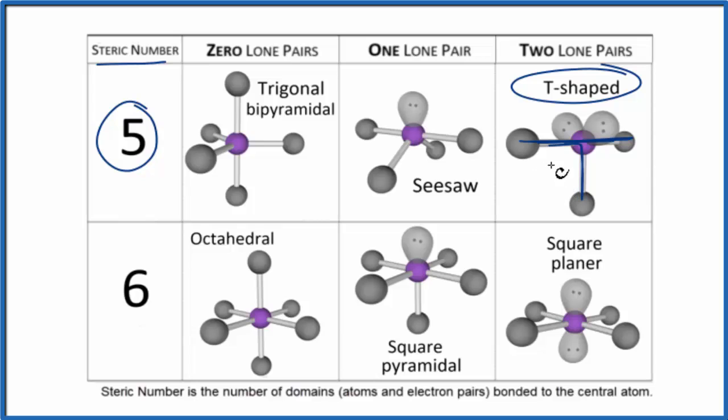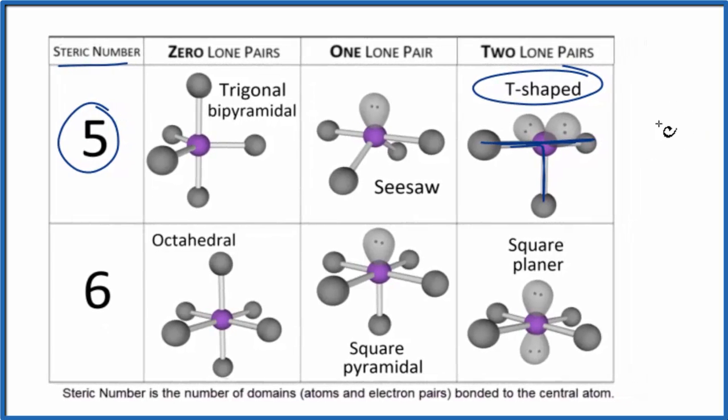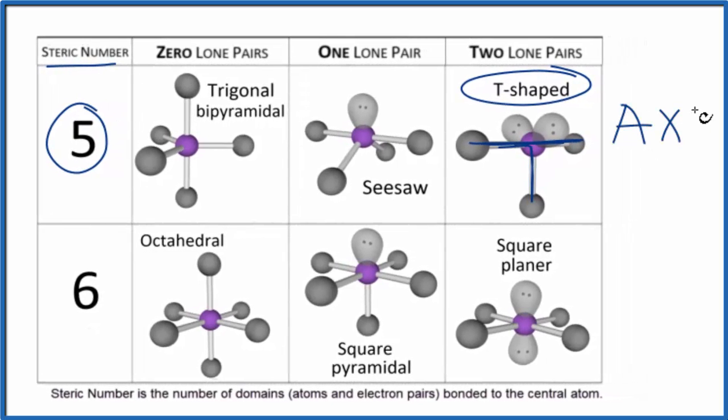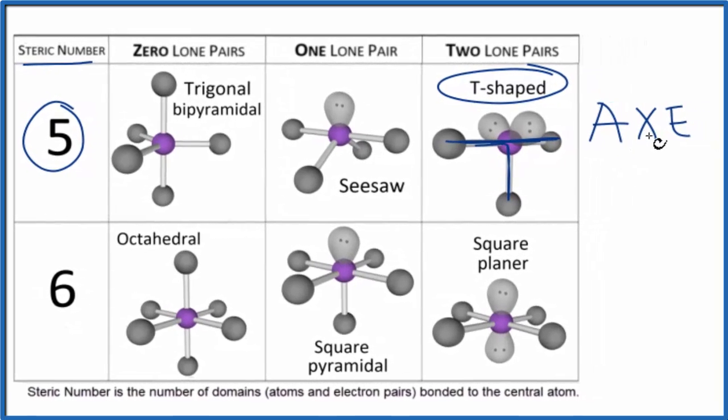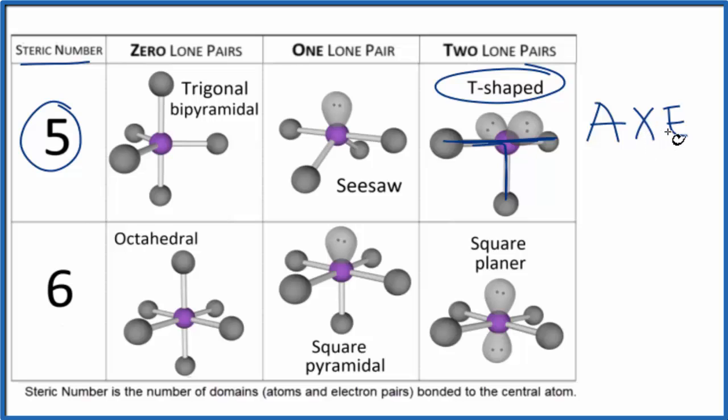We could also use the AXE notation to figure out what our molecular geometry was for IBr3. AXE, where A is the central atom, X the bromine atoms, we have three,